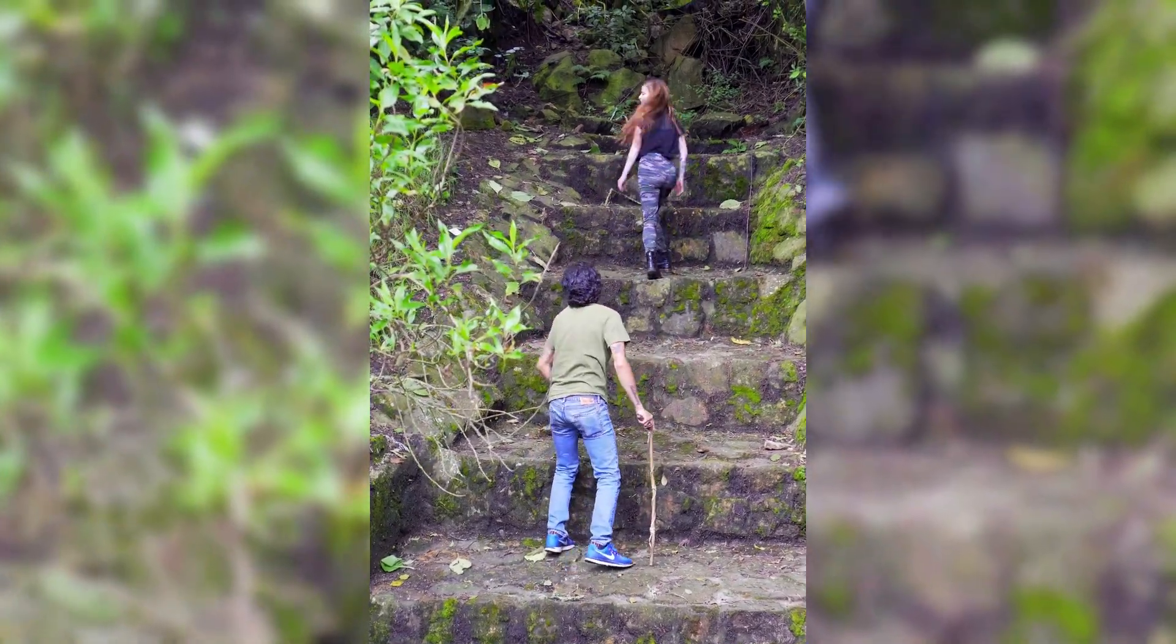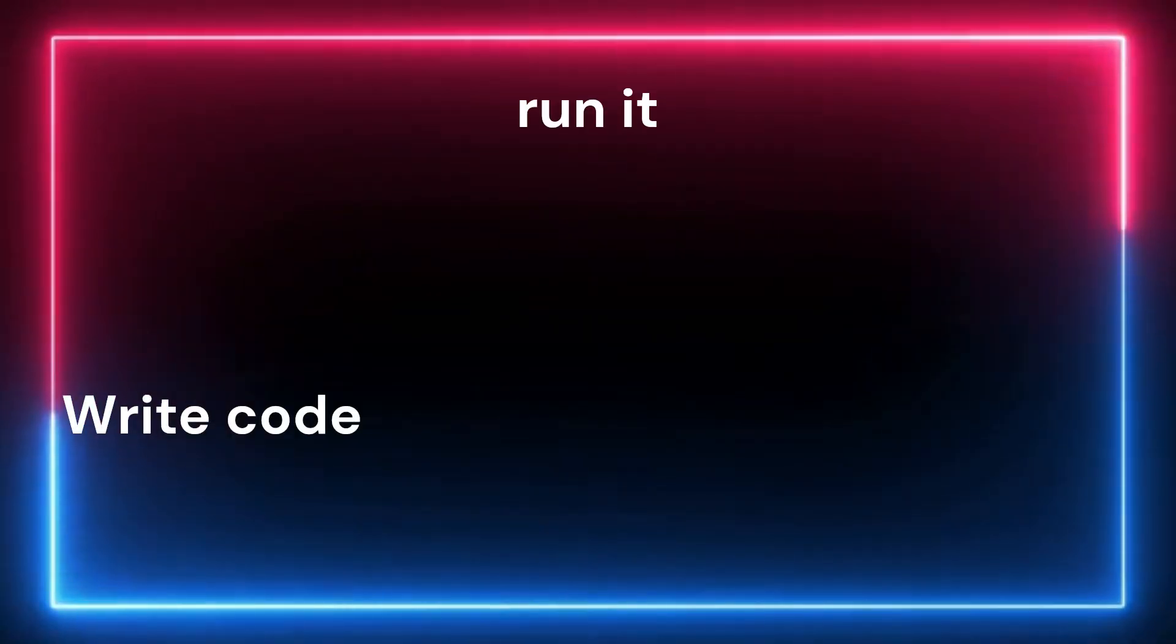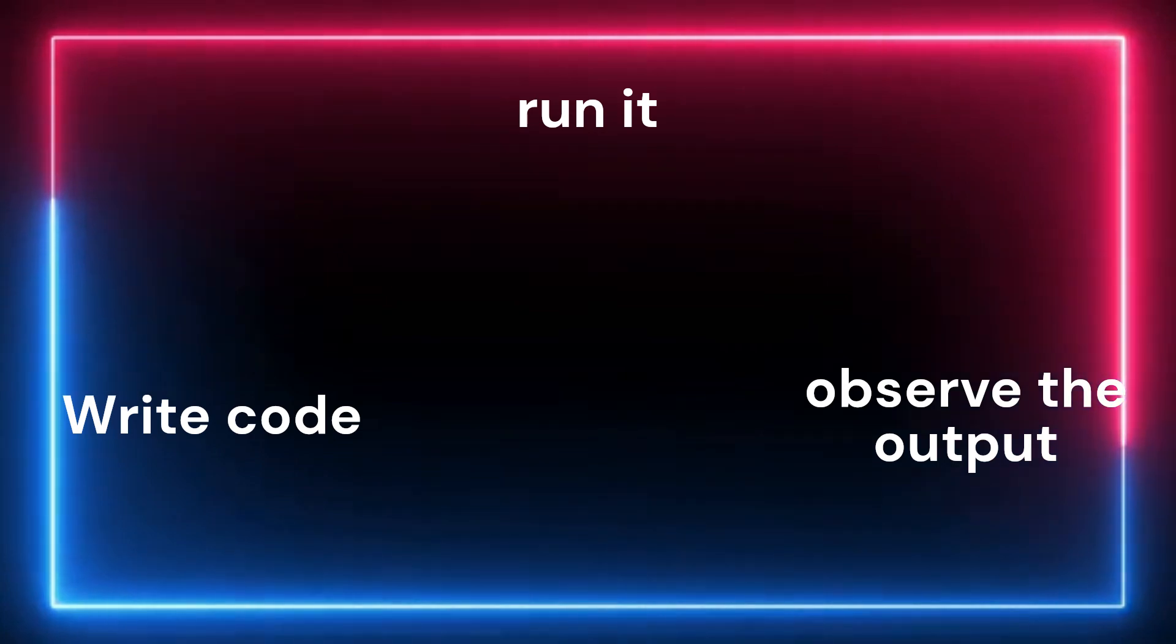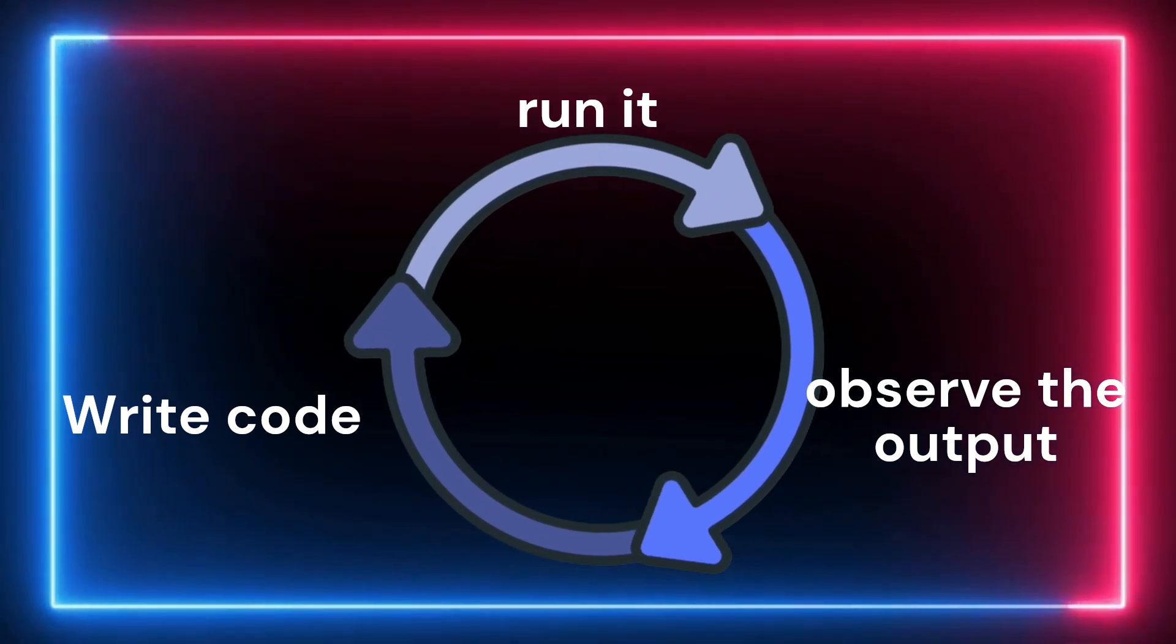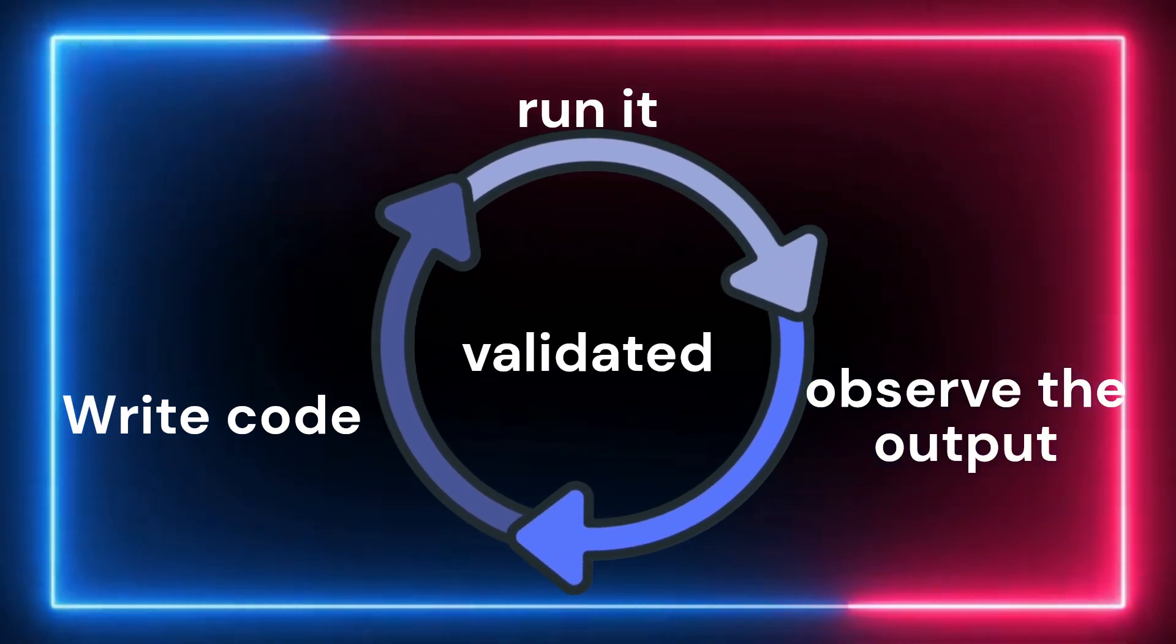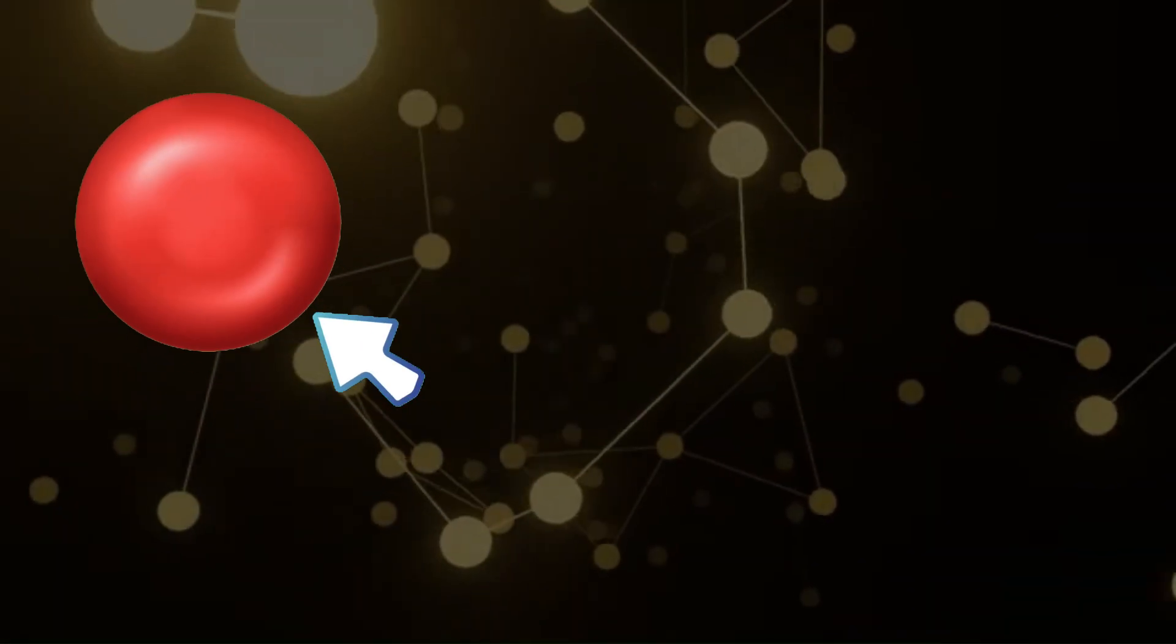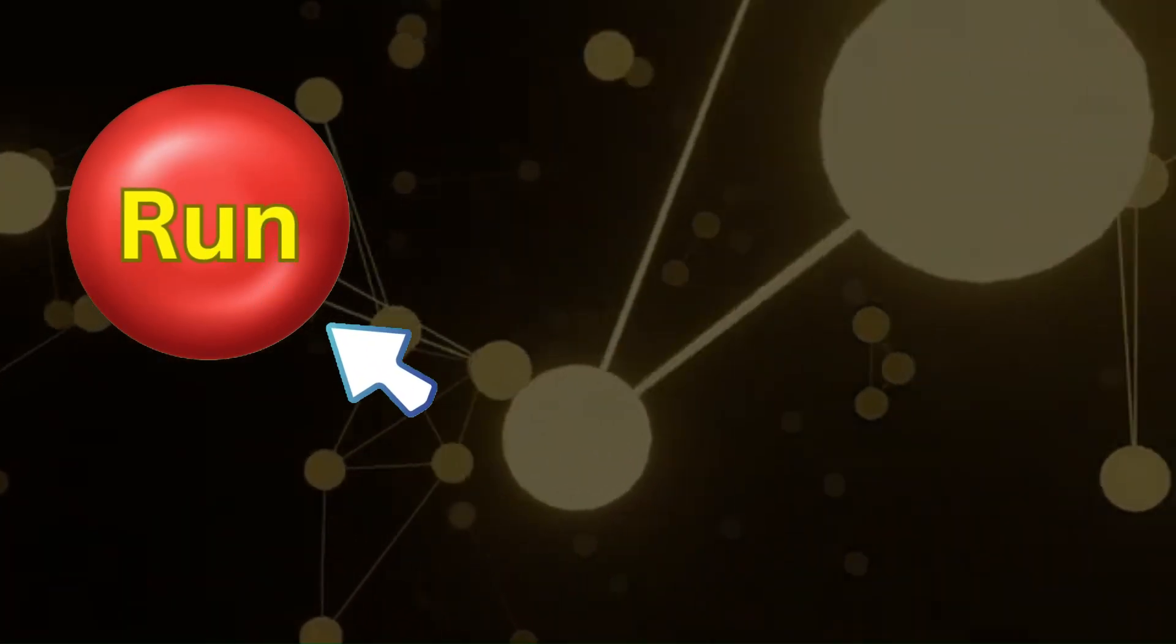Typically, we are taught to write code, run it, and observe the output. This cycle is essential because code needs to run to be validated. However, if you rely solely on running your code to understand its behavior, you may struggle with building strong logic skills.